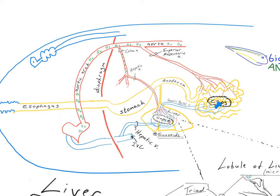In order to not send that nutrient-rich and potentially toxin-laden blood back to the rest of the body directly, it goes through what's called the hepatic portal vein — not a regular vein, a portal vein — to the liver, where it joins the oxygenated blood and goes to the capillaries of the liver, enabling the liver to store nutrients and remove toxins from the blood.